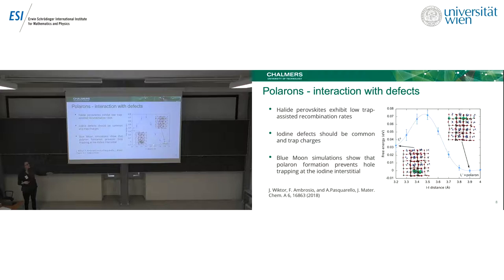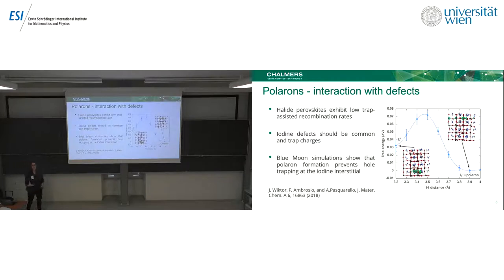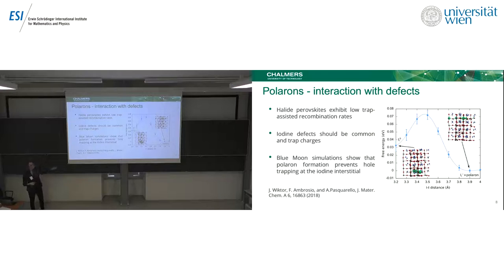When I allow for dynamics, I have a system in which a polaron is formed somewhere in the cell and the iodine interstitial is still negative. If I want to trap this hole at the interstitial, there is a barrier to overcome and the system ends up at higher energy. This is opposite to what we find at zero Kelvin. It's a mechanism in which polaron formation protects the charge from being trapped at a defect.